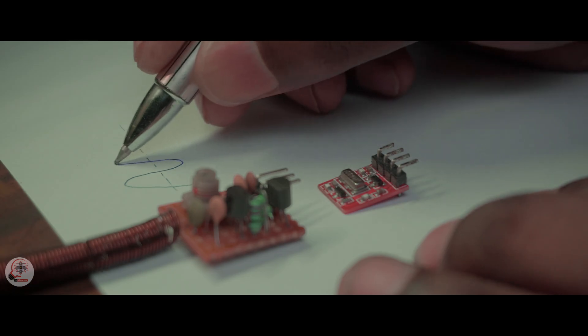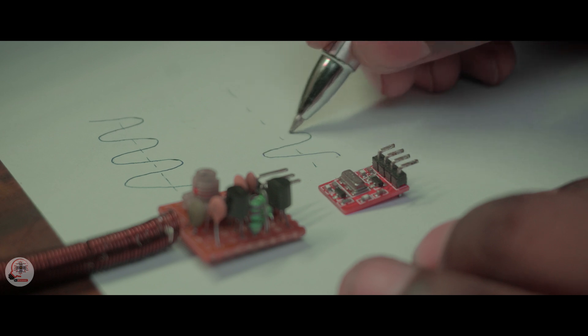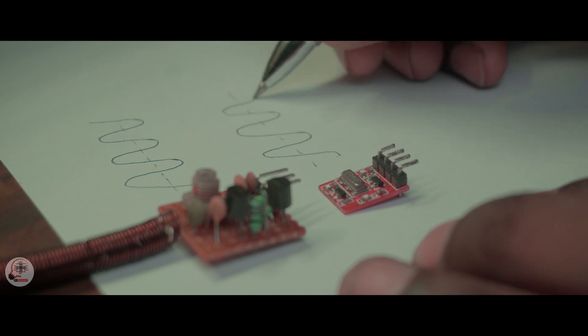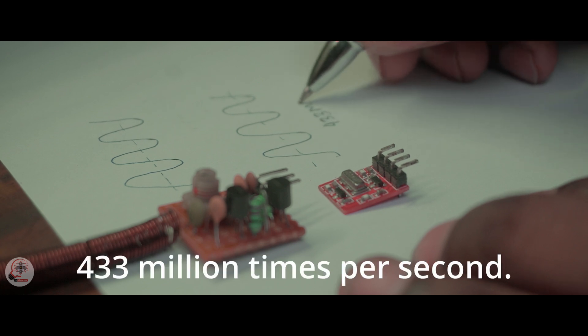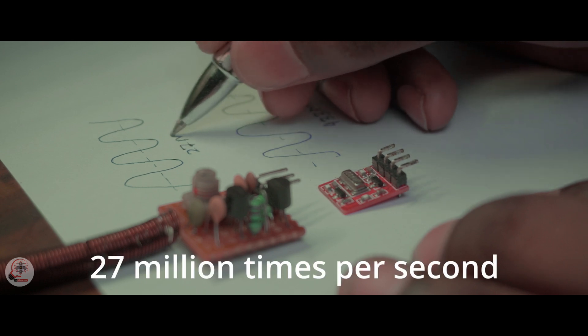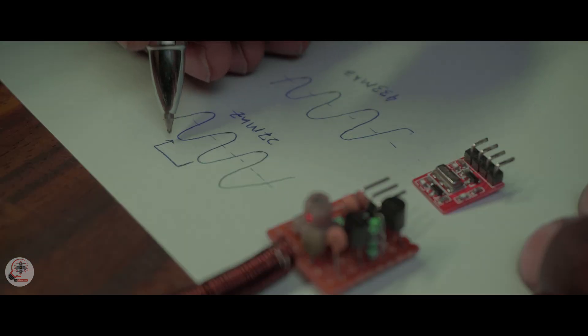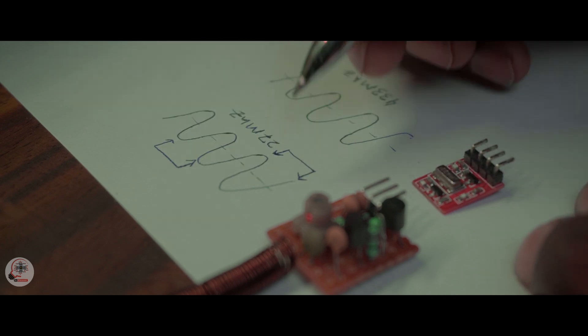This 27 MHz transmitter oscillates this way. Even this 433 MHz transmitter oscillates similarly. But the major difference is that this 433 TX can oscillate 433 million times per second. On the other hand my one oscillates 27 million times per second. The distance between two waves is called wavelength.